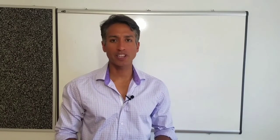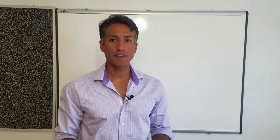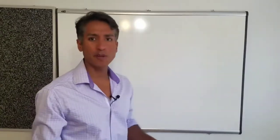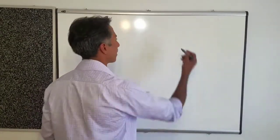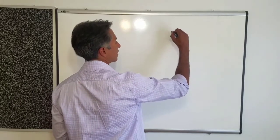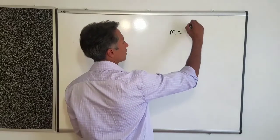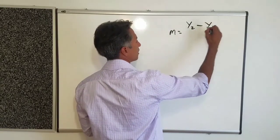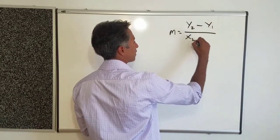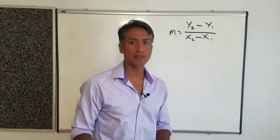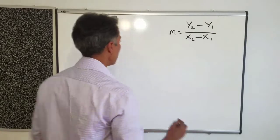Hi, this is Josh and thanks for watching. Today we're going to be working through the formula on how to figure out the slope of a line. Let's get started — I'm going to write the formula first and then work through it. The formula is M equals y-sub-2 minus y-sub-1 over x-sub-2 minus x-sub-1. I'm just going to put it up in the corner and then let's talk about it.